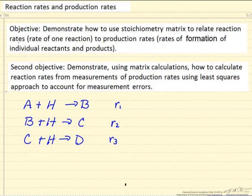Production rates, for example, would be the rate that C forms, or if it's negative it's decomposing, but the rate that C or the rate that D forms. And so we have five rates of formation of individual reactants and we have three reaction rates.